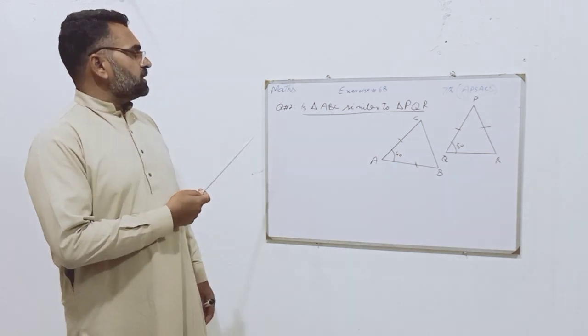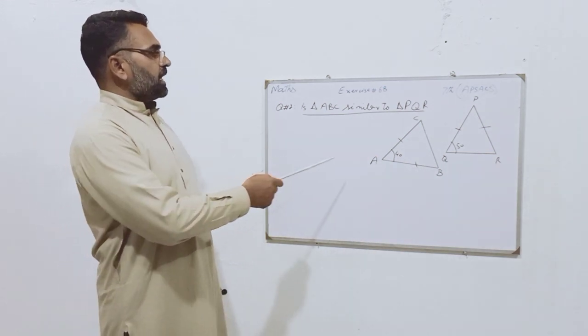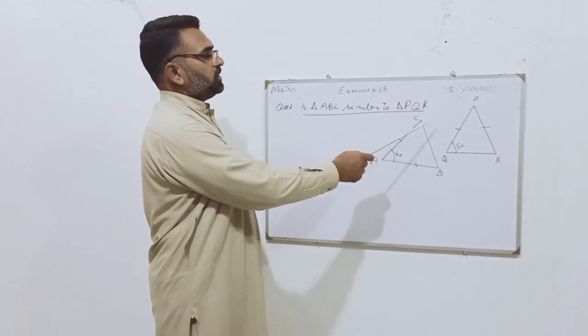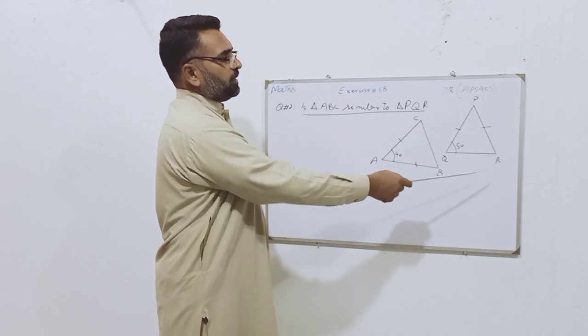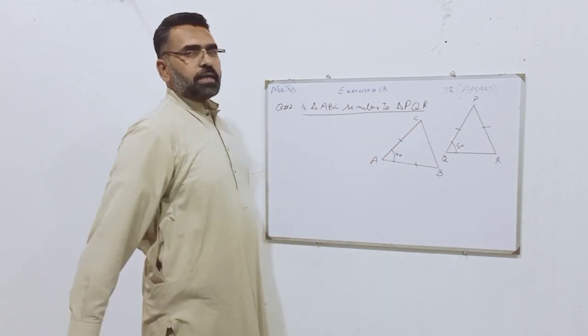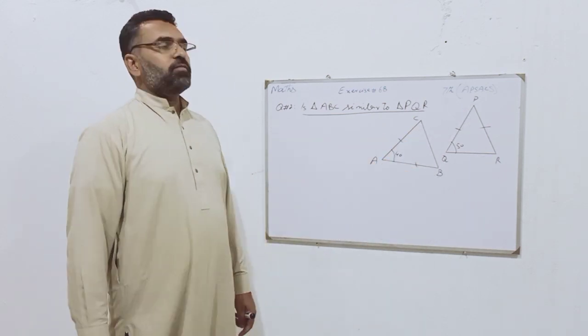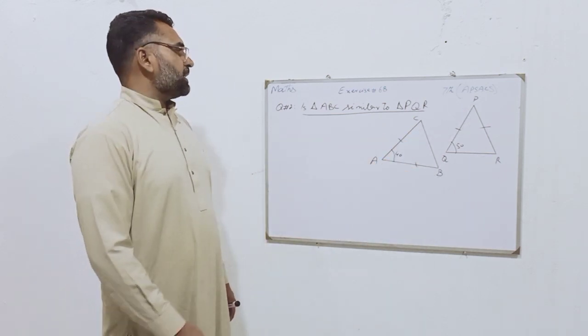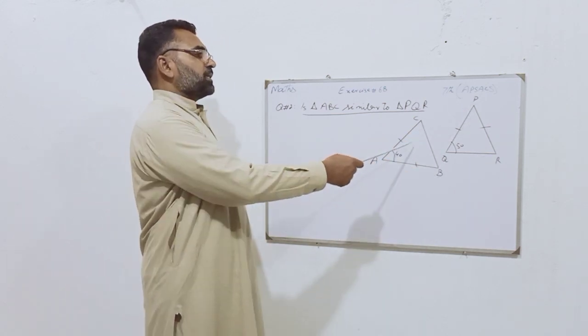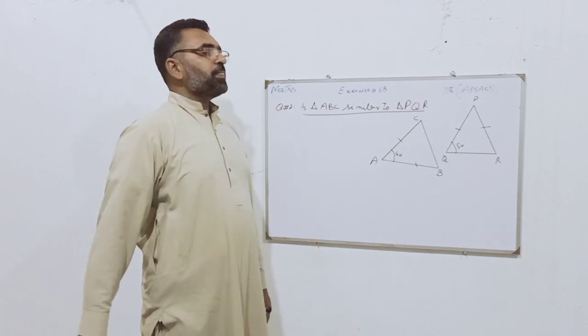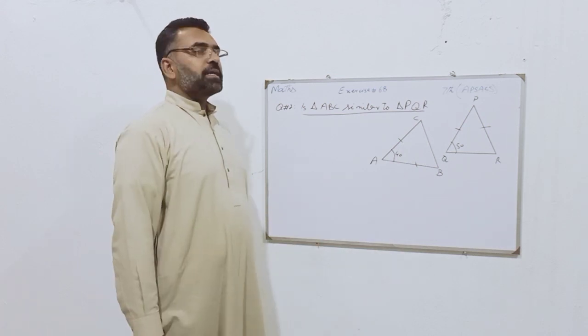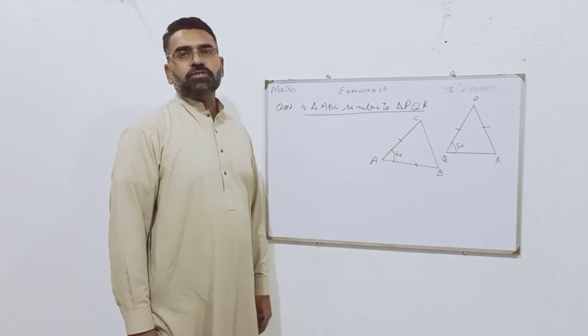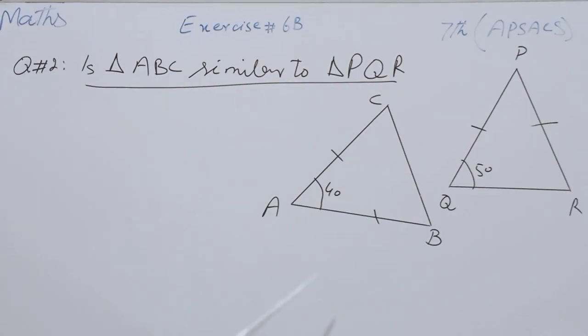Question number 2 is: is Triangle ABC and Triangle PQR similar? We have to explain whether they are similar or not.